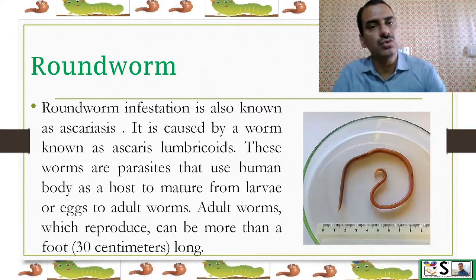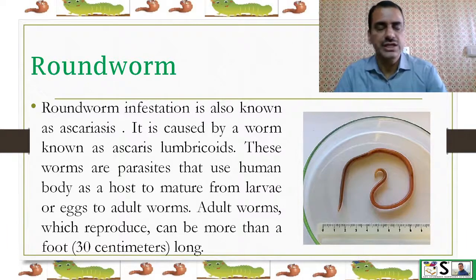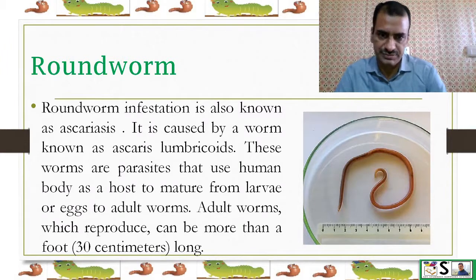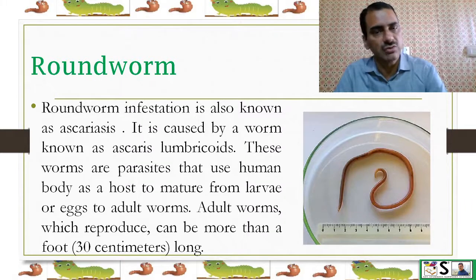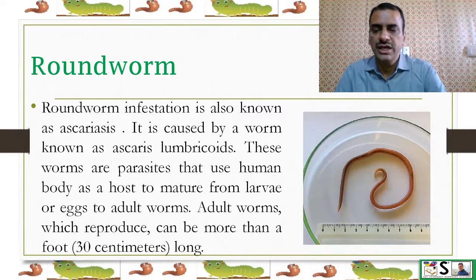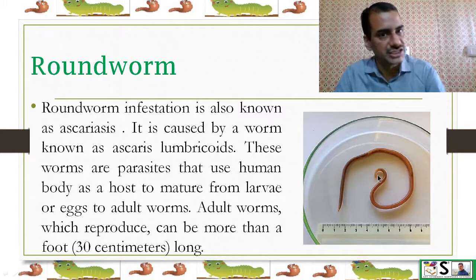Let us first look at roundworm infestation. Roundworm infestation is also known as Ascariasis. It is caused by a worm known as Ascaris lumbricoides. These worms are parasites that use the human body as a host to mature from larvae to eggs to adult worms. Adult worms which reproduce can be more than 30 cm long.